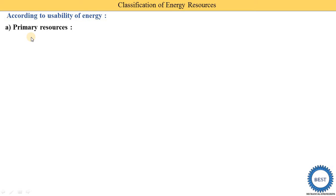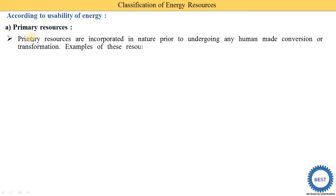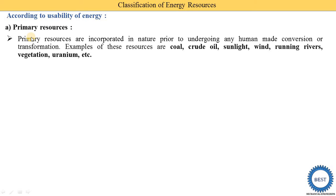First, we understand primary resources. Primary resources are incorporated in nature prior to undergoing any human-made conversions or transformations — means they are available in nature and we are able to convert them from one form to another form. Examples of primary resources are coal, crude oil, sunlight, wind, running rivers, vegetation, and uranium. These things are all naturally available in nature, that's why they are called primary resources.